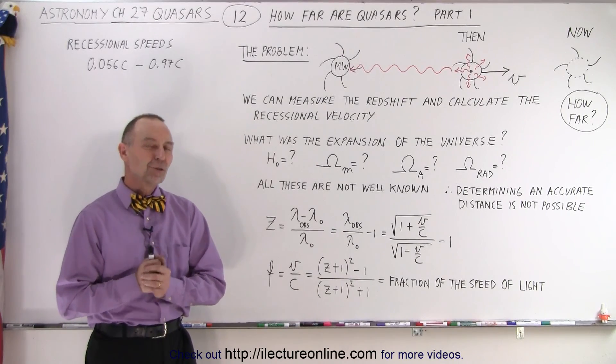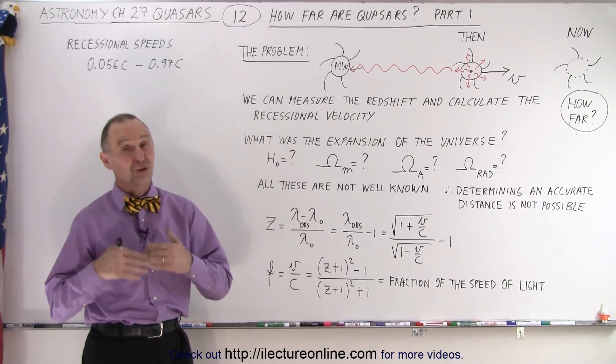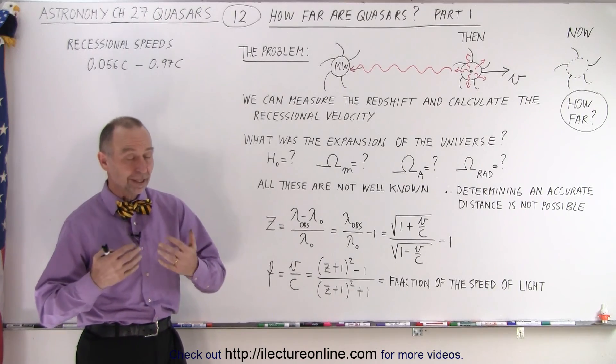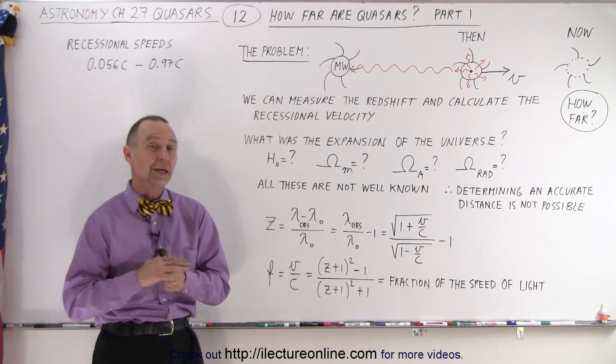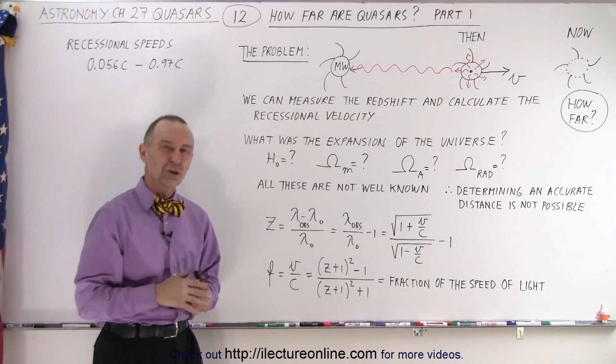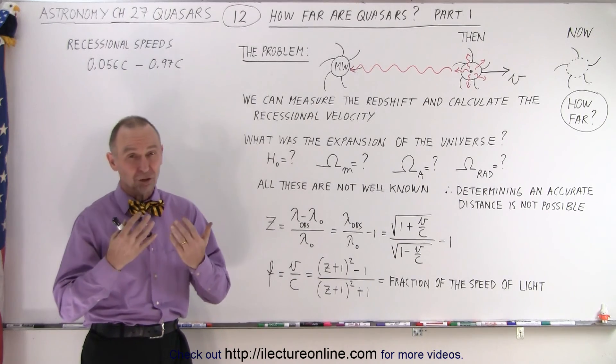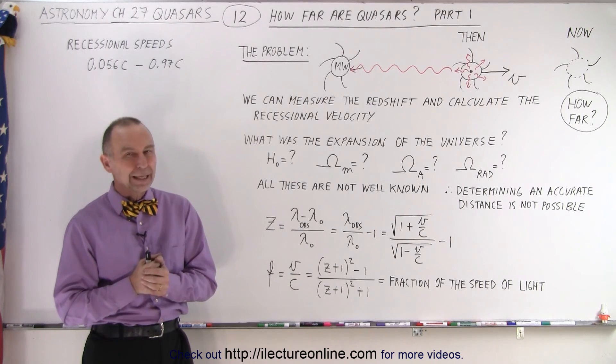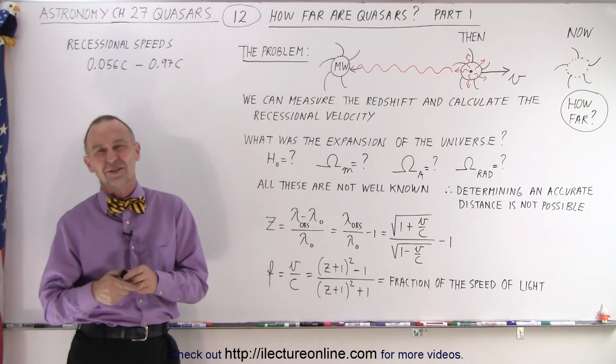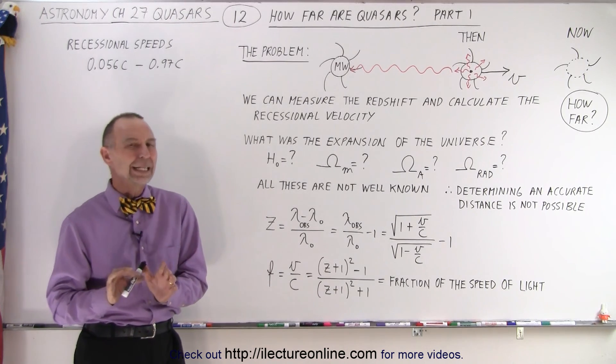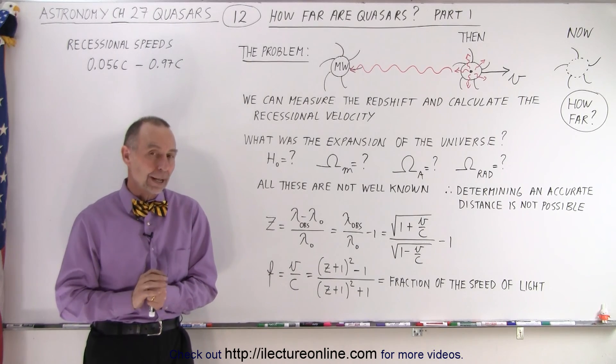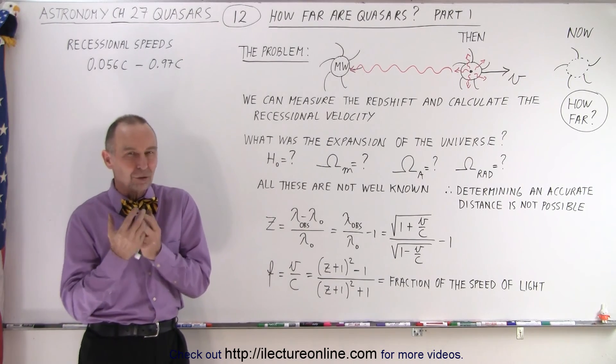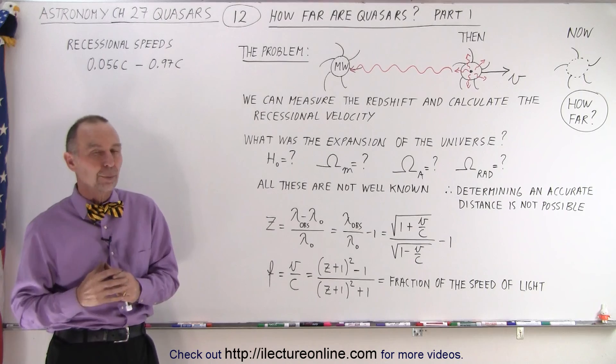Welcome to iLecterOnline. So how far is it to these quasars? By now we realize that quasars are really far away towards the far edges of the universe. And when we say the far edges, we talk about the visible portion of the universe. But can we really determine the distance? The answer is not really, not accurately anyway. It's impossible to get an accurate distance to objects that are that far away.